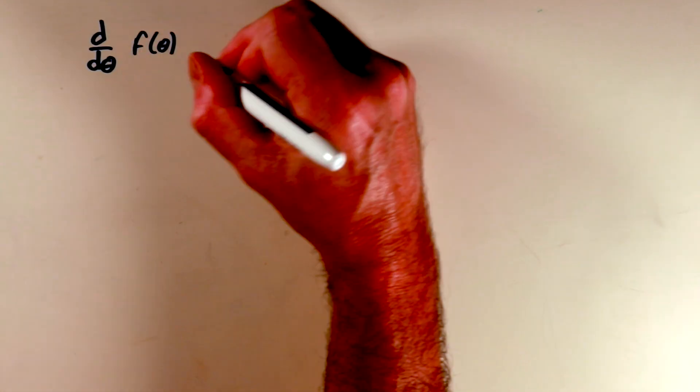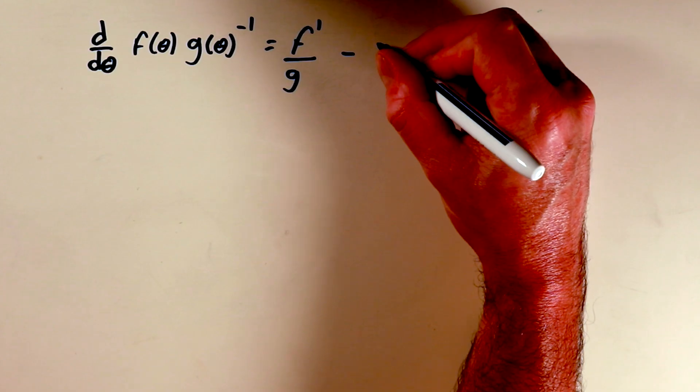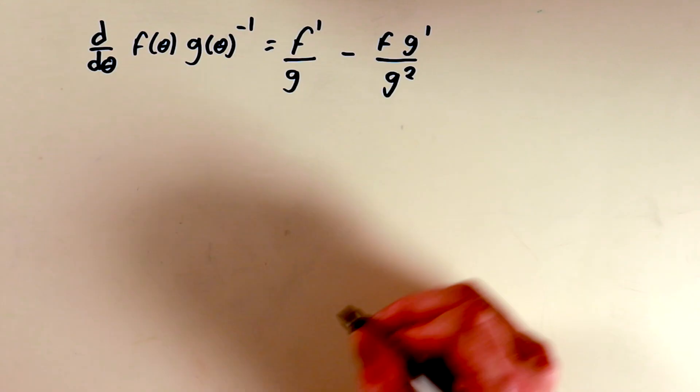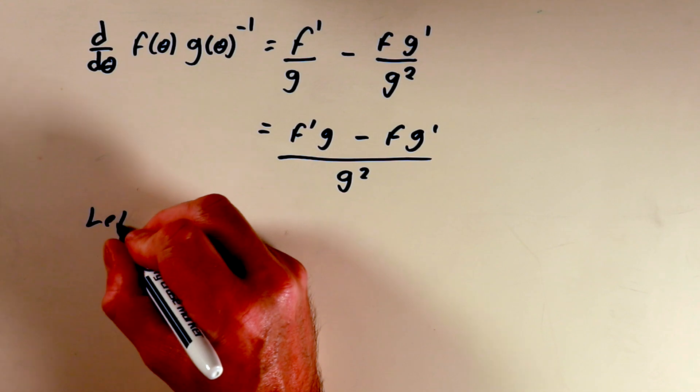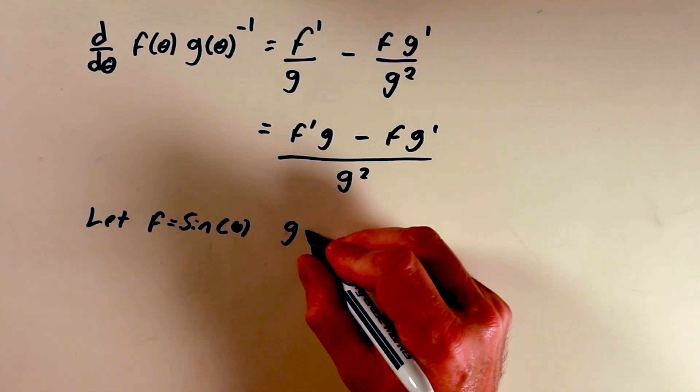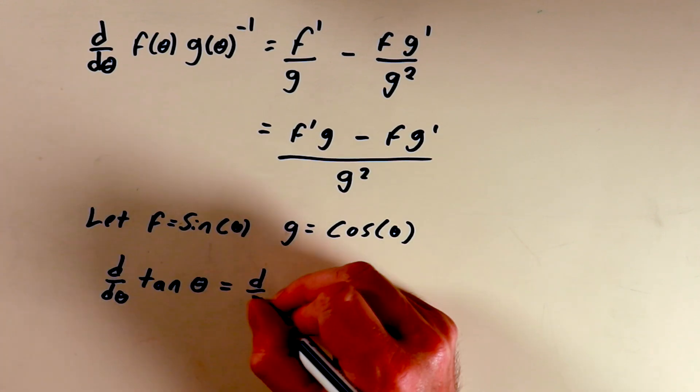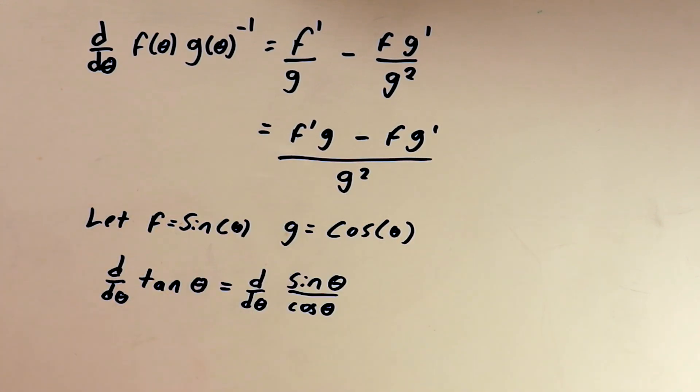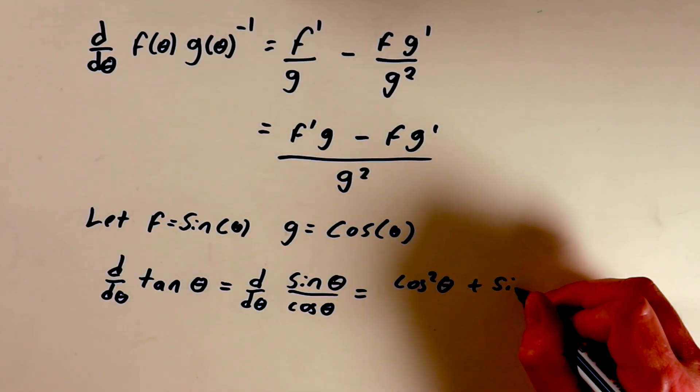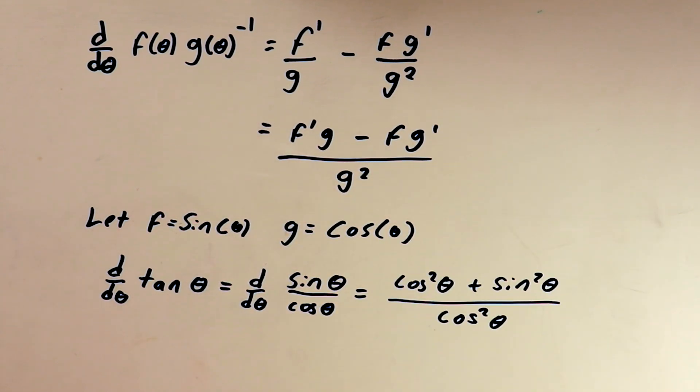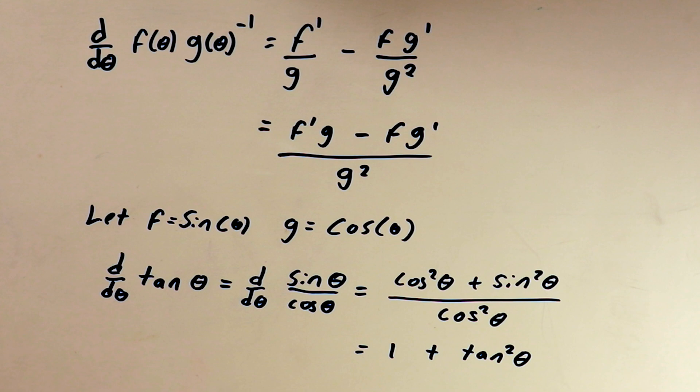The derivative of f times g to the minus 1 is equal to f prime over g minus f times g prime over g squared. This is the same thing as f prime g minus g prime f all divided by g squared. With f equals sine theta and g equals cosine theta, then f prime is equal to the cosine of theta, and g prime is equal to minus sine theta. Substituting this into the quotient rule, we get that the derivative of the tangent is cosine squared of theta plus sine squared of theta, all divided by cosine squared of theta. Dividing through both terms by the cosine squared, we get 1 plus the tangent squared, thus confirming our geometric result.